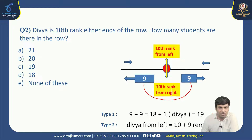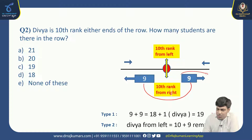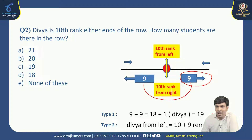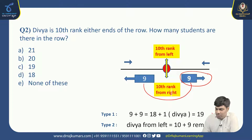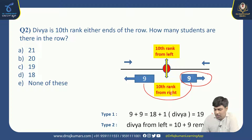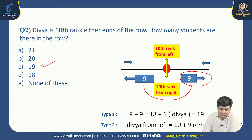We can solve this in another method as well. When Divya is counted from the left, she is in 10th position. After 10th position, there are still 9 more students standing after her. Adding those remaining 9 to Divya's position: 10 plus 9 gives 19 again. So the right answer for this problem is option C, 19.